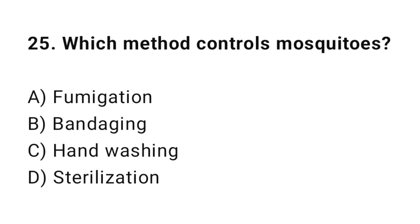Question number twenty-five: which method controls mosquitoes? The right answer is A — fumigation. Fumigation kills adult mosquitoes.